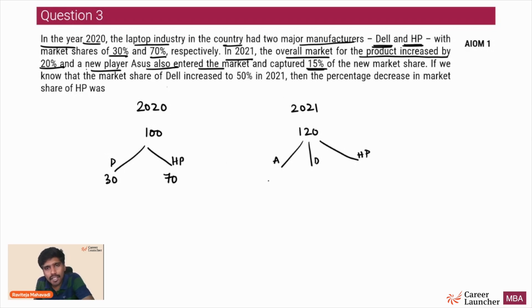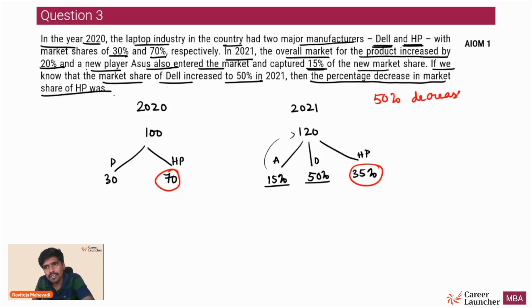Asus has captured 15% of the market. If we know that the market share of Dell increased to 50%, Dell is now 50%. So 15% if Asus has taken it, 50% Dell has taken it, how much is left for HP? HP has only 35% left. What is the question asking? Percentage decrease in market share of HP was how much? Market share of HP was 70%, now it has become 35%. Percentage decrease in market share of HP is 50%. It's almost a no brainer.